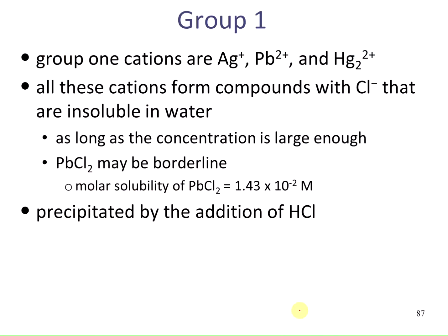The group 1 cations are silver, lead, and mercury. All of these cations form compounds with chloride that are insoluble in water, as long as the chloride concentration is large enough. You have to be careful about lead chloride—its molar solubility is 1.43 × 10⁻² M, making it more soluble than silver or mercury chlorides. This is why the precipitation of lead chloride isn't always completely efficient, and you'll sometimes have some lead bleeding over into the group 2 and group 3 analysis. All are precipitated by the addition of hydrochloric acid.